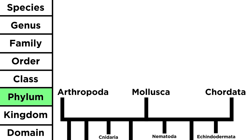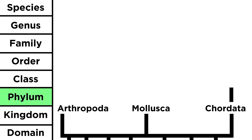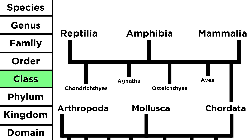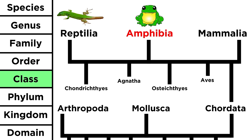Within each phylum we can find different classes of organism. Chordata contains the class reptilia, which are reptiles like crocs and snakes and lizards; amphibia, which are amphibians like toads and frogs; and mammalia, which are all the mammals, from kangaroos to elephants.